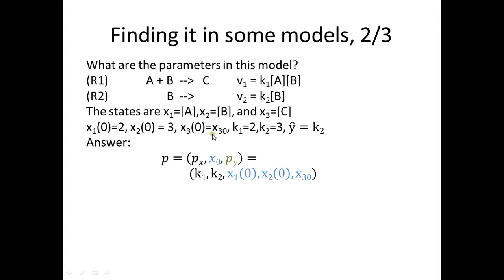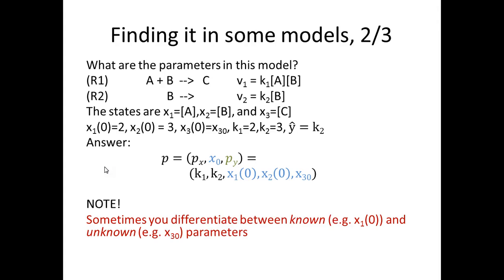k1 and k2 are the px parameters. The initial conditions are specified for the relevant states — one of them has no initial guess so it will certainly need to be determined by optimization. For the measurement equation, we need to be careful: k2 appears in it but k2 is a px parameter — a rate constant — not a py measurement parameter. Therefore there are no new parameters in the measurement equation; there is no offset parameter and no scaling parameter. We can measure the rate constant directly.